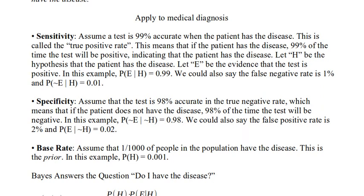Specificity: assume the test is 98% accurate in the true negative rate. If the patient does not have the disease, 98% of the time the test will be negative. So with the negation of H, we ask how often the evidence says the patient doesn't have the disease. The probability of not E given not H is 98%, and similarly the false positive rate is 2%.